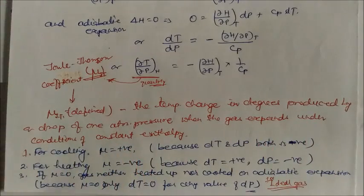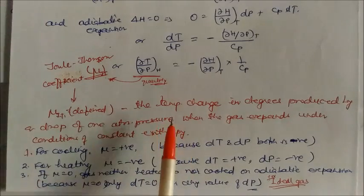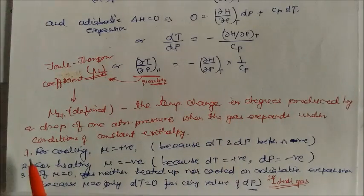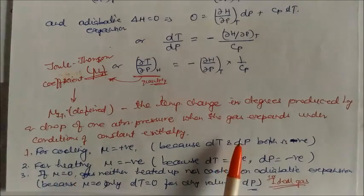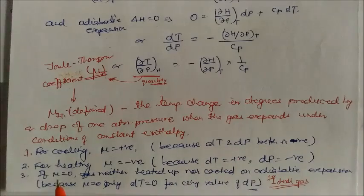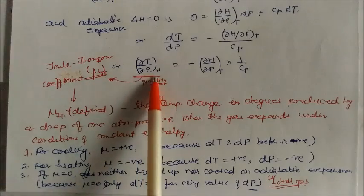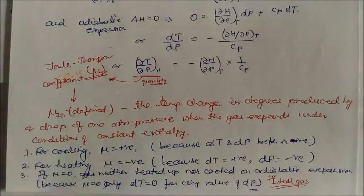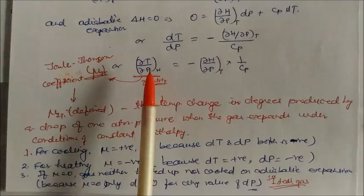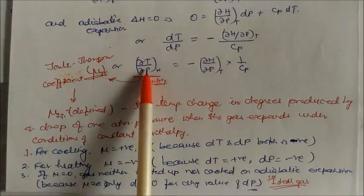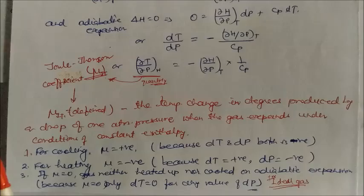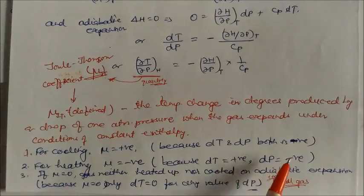For cooling, mu_JT is positive because both dT and dP are negative — P2 is less than P1 so dP is always negative — and if dT is also negative, their ratio is positive. For heating, if dT is positive and dP is negative, then mu_JT is negative. If mu_JT is zero, the gas is neither heated nor cooled upon adiabatic expansion. This corresponds to an ideal gas, where delta T is zero for any value of dP. For a real gas, mu_JT can be positive or negative.